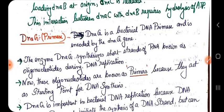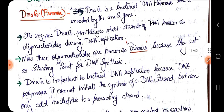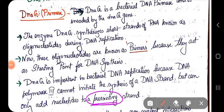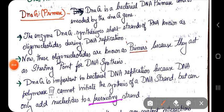These primers are the starting point for DNA synthesis because DNA polymerase 3 cannot initiate the synthesis of a new DNA strand on its own — it can only add new nucleotides to a pre-existing strand. That pre-existing strand is the primer synthesized by primase. DNA polymerase 3 cannot synthesize a totally new strand; it can only synthesize when there is a small pre-existing strand.